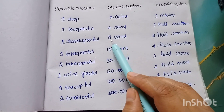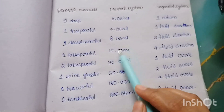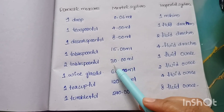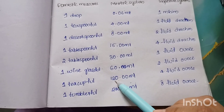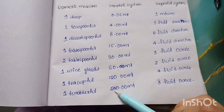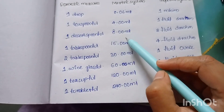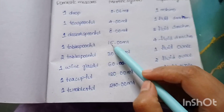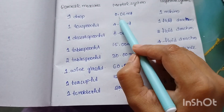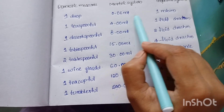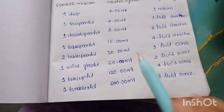The values follow a doubling pattern: 4, then 8 — but 8 doubled is 16, and 16 minus 1 gives 15. Then 15 doubled is 30, 30 doubled is 60, 60 doubled is 120, 120 doubled is 240. These values are almost double only — except 8 doubled is 16 but we use 15 instead. Key values: 0.06 ml for 1 drop, 4 ml for 1 teaspoonful.